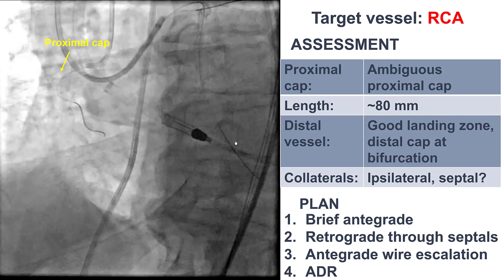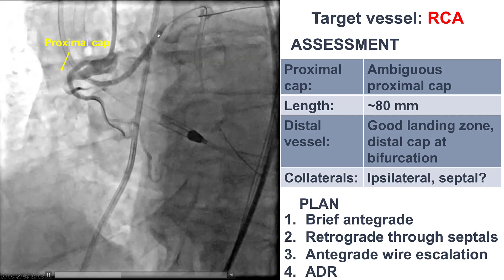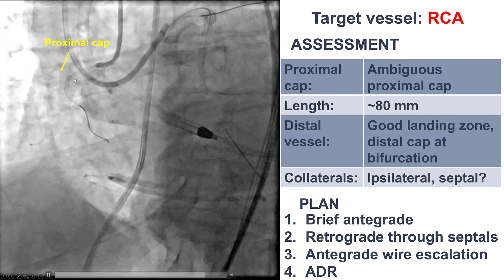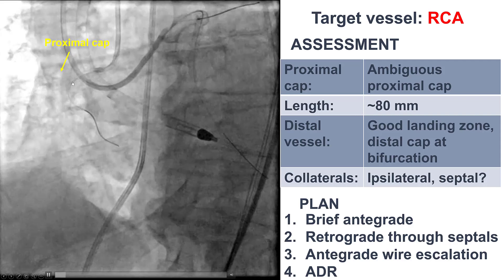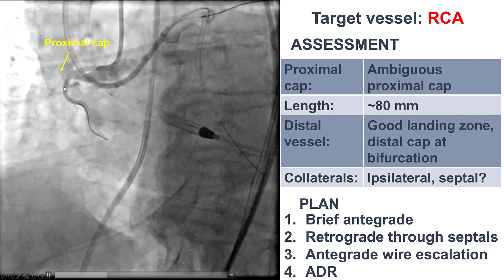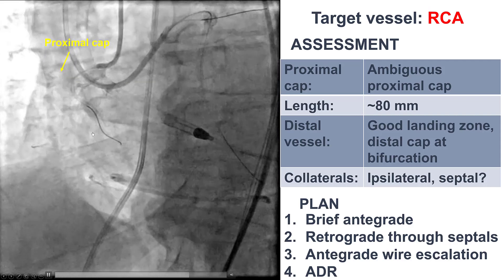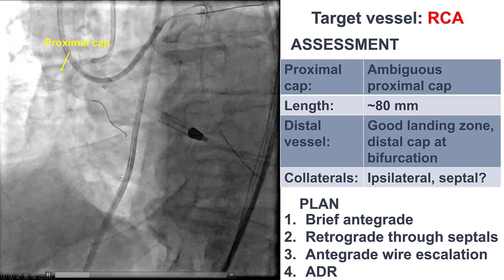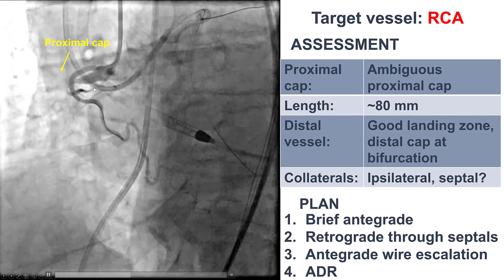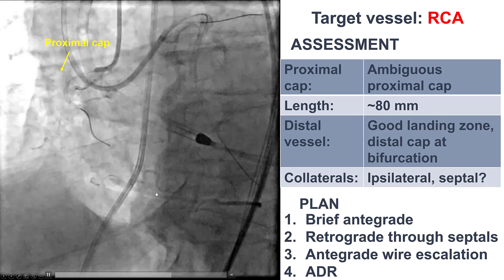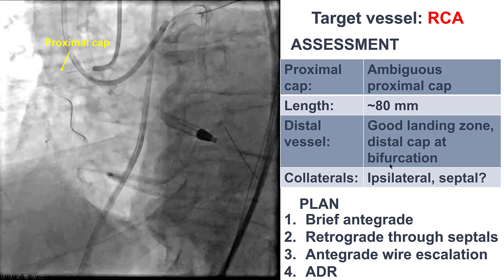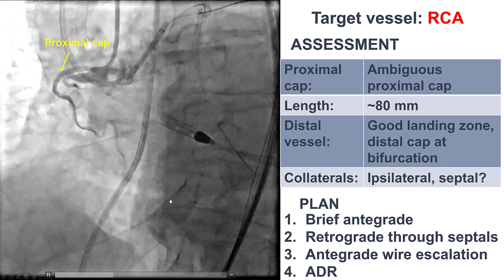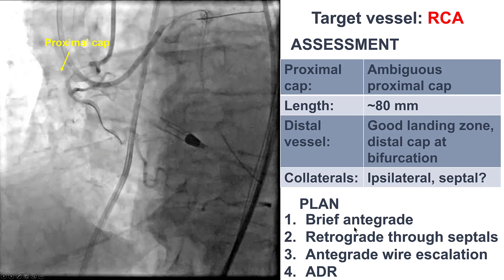The RCA was actually a harder CTO. It had an ambiguous proximal cap, it was a long CTO, the distal vessel was filling through an epicardial collateral — the conus branch — and the distal vessel was of good quality.